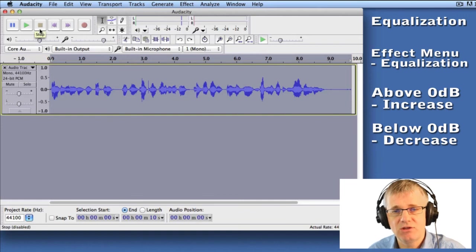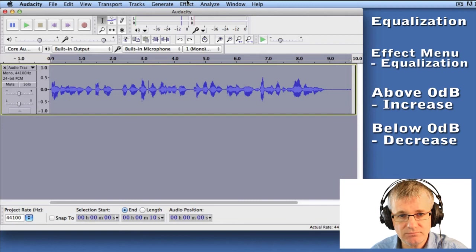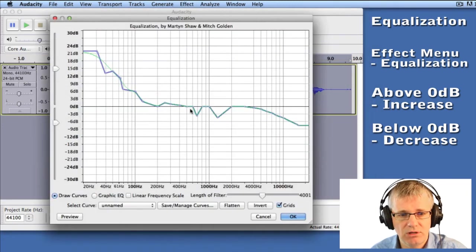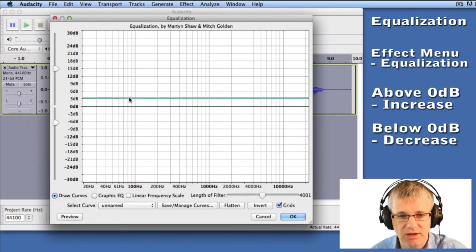You may want to make other changes, and you can make your own custom changes as well. Go back to Effect, then Equalization, and make changes as you need to. You can also flatten - that'll take everything down to zero. Then you can manually change things around.